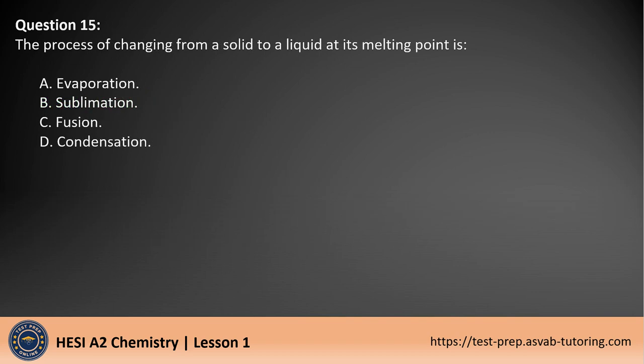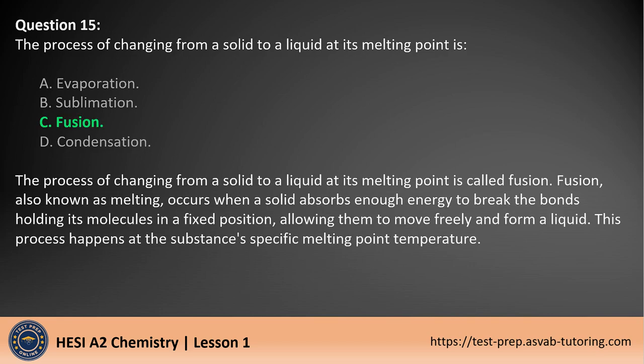Question 15. The process of changing from a solid to a liquid at its melting point is A. Evaporation. B. Sublimation. C. Fusion. D. Condensation. The answer is C. The process of changing from a solid to a liquid at its melting point is called fusion. Fusion, also known as melting, occurs when a solid absorbs enough energy to break the bonds holding its molecules in a fixed position, allowing them to move freely and form a liquid. This process happens at the substance's specific melting point temperature.